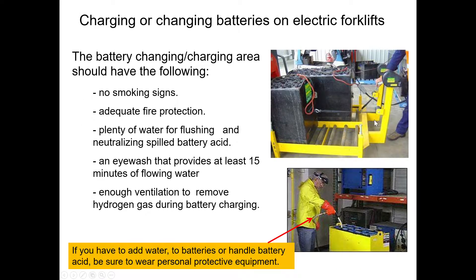For charging or changing batteries on electric lifts and pallet jacks: there will be a designated changing and charging area. Do not smoke in these areas because of hydrogen gas produced by batteries. There needs to be fire protection, plenty of water for flushing and neutralizing spilled battery acid, an eyewash station, and adequate ventilation to remove hydrogen gas during charging. Adding water to batteries requires appropriate PPE.